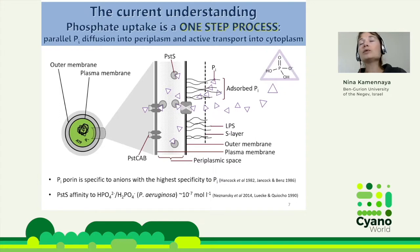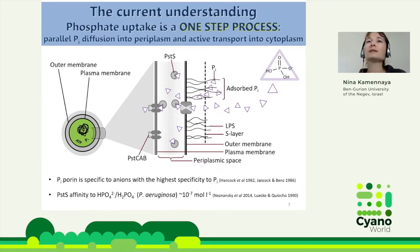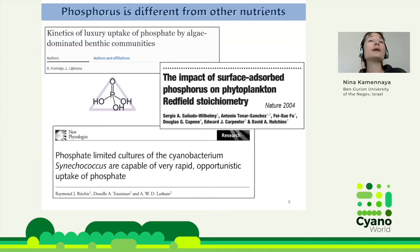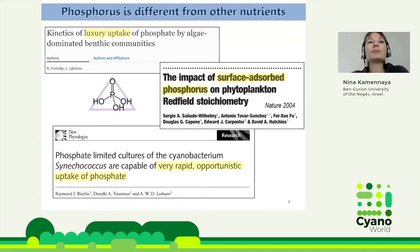This current one-step phosphate uptake model works similarly for many nutrients such as nucleic acids, sugars, nitrate, nitrite, and urea — a porin lets the solute in, then active uptake follows. But with phosphate there are several problems. Phosphate is not like other nutrients, as seen in many publications describing it as 'luxury uptake,' 'surface-absorbed phosphorus,' or 'very rapid opportunistic uptake.' Something is wrong — phosphate does not behave normally.